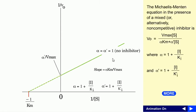Starting again with the normal Michaelis-Menten equation: V0 equals Vmax times S divided by Km plus S. But in this mixed type of inhibition, we are having both types of inhibition at the same time — that means we are having competitive inhibition along with uncompetitive inhibition.